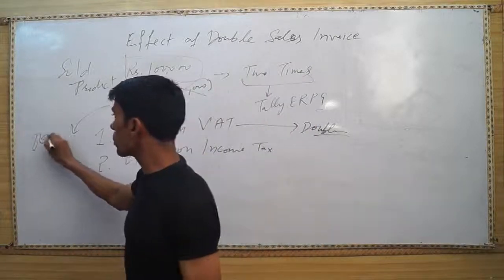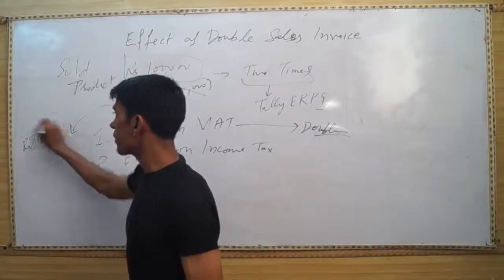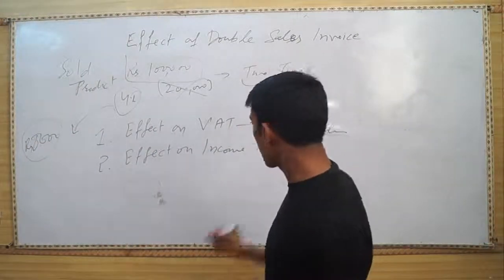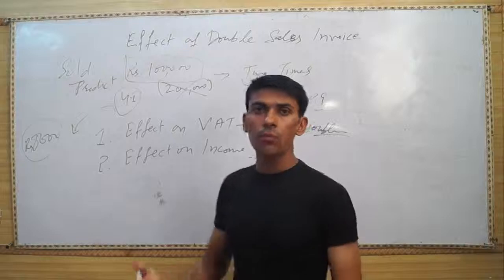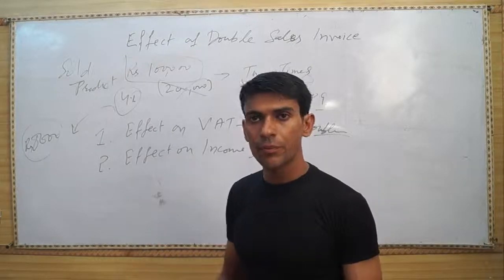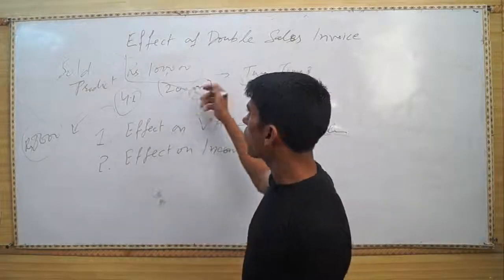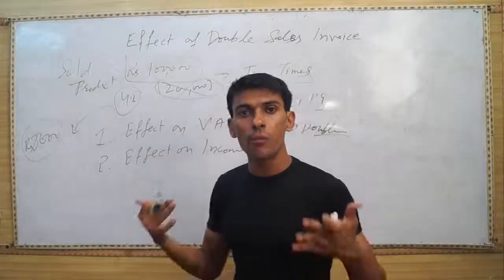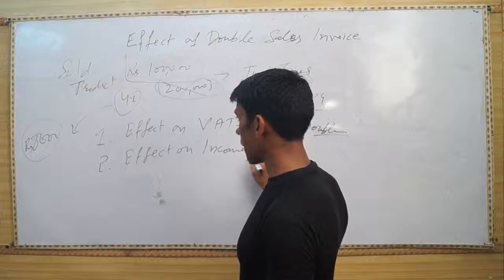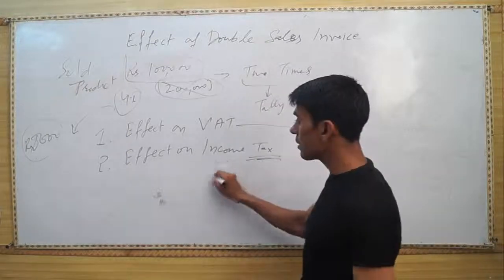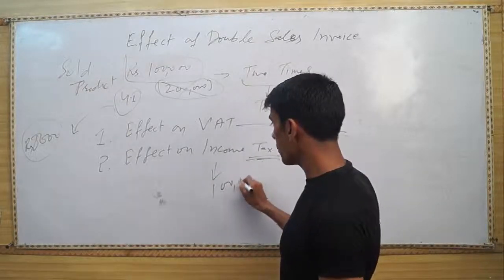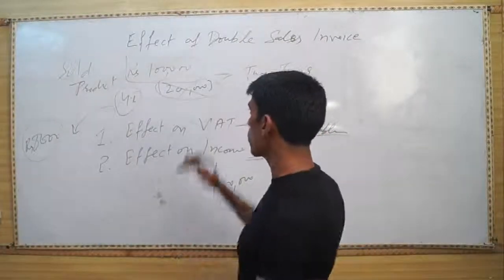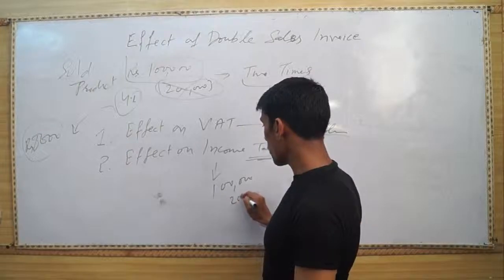This is a mistake you have to get refund for. Second, if you have to pay income tax, you have to show sales of two lakhs, so you have paid double income tax. If your income tax on one lakh is two thousand, you paid double due to this mistake.